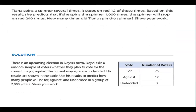Tiana spins the spinner several times and it stops on red 12 of those times. Based on this result, she predicts that if she spins the spinner 1,000 times, the spinner will stop on red 240 times. How many times does Tiana spin the spinner? Notice it doesn't tell you what section of the spinner is red or if there are numbers — it just asks how many times does Tiana spin the spinner.